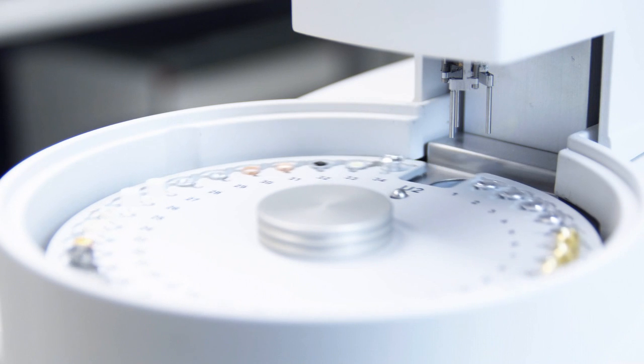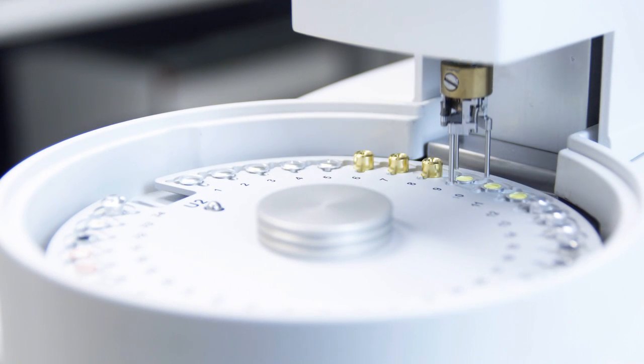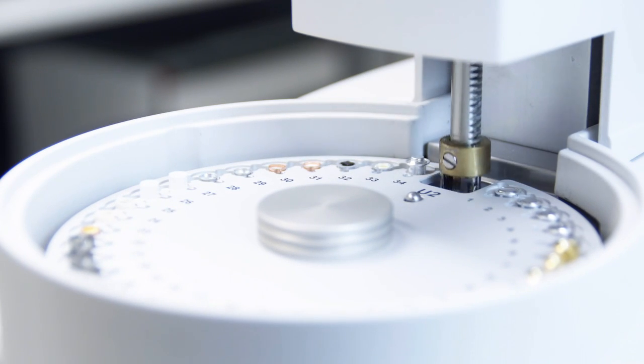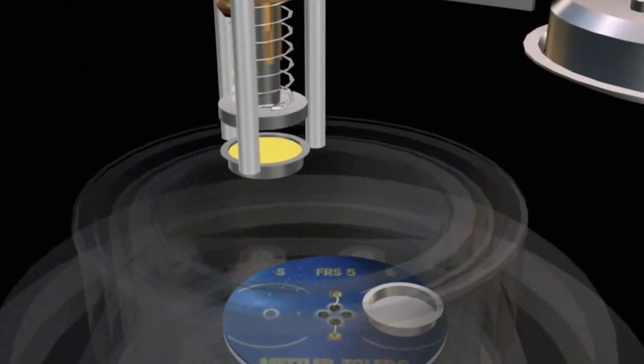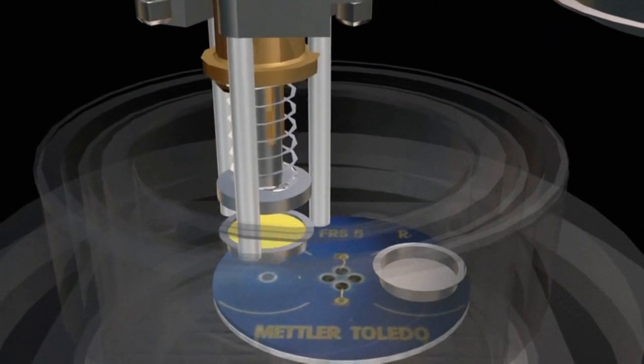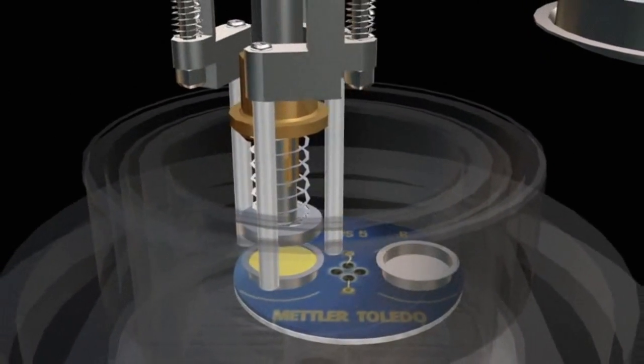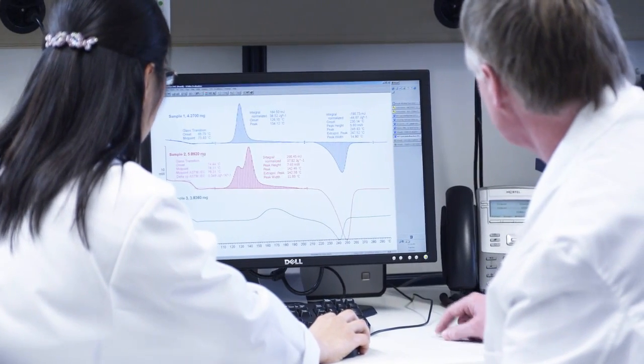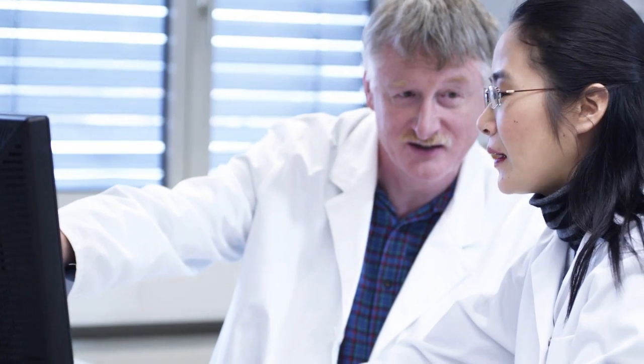The Mettler Toledo DSC models can be automated using a robust and reliable sample robot. The robot has 34 sample positions and a universal gripper capable of handling all types of crucibles. The powerful STAR software provides unrivalled flexibility and practically unlimited evaluation possibilities.